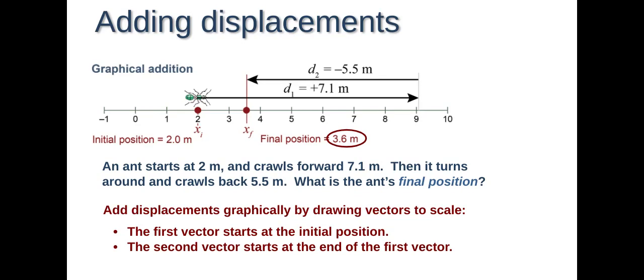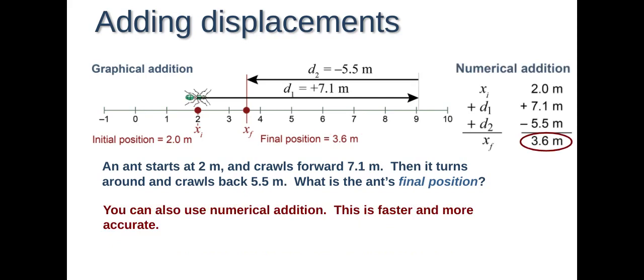So adding displacements graphically by drawing vectors to scale. That's one way that you can add displacements. The first vector starts at the initial, second starts at the end of the first. You can see D1 is a positive 7.1, which we gave and D2 is a negative 5.5, which we also said. And then our final position right there is 3.6. You can do this with numerical addition, which is the faster and more accurate way to do this instead of drawing the picture on an actual line graph. So over to the side, we have 2.0 plus 7.1 minus 5.5 equals 3.6 meters.